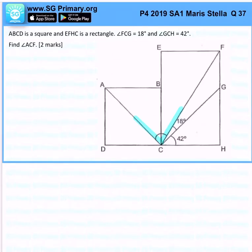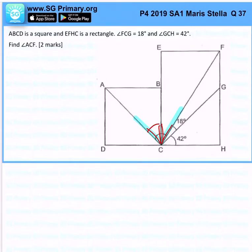Let's understand how to get ACF. First, you must realize that angle ACF is made up of 2 smaller angles. We can easily get angle ACB because it is just half of the right angle — since it's a diagonal of a square, it bisects it. So it will be 45 degrees.